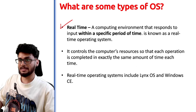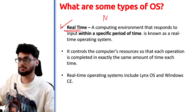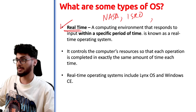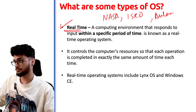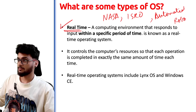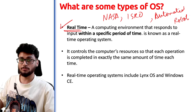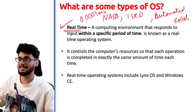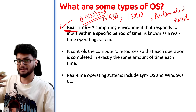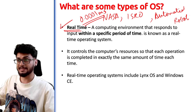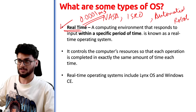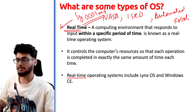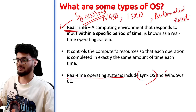Then comes the Real-Time Operating System. These are used by NASA, ISRO, or other heavy machinery and automated robots. They are called real-time because they have very little time to perform calculations — probably 0.0001 microseconds or milliseconds. There is a specific time limit given to the system to respond. Examples are LynxOS and Windows CE.